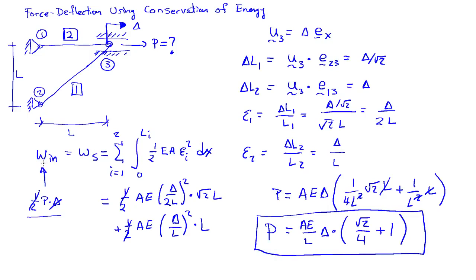We start with the work in and set it to the work stored. In this case, we use the kinematic expression for the work stored, which is the integral with respect to the strains. We use the kinematics of the system to calculate what the strain in each bar is by using the unit vectors that run along each bar to project the known displacement in the system.